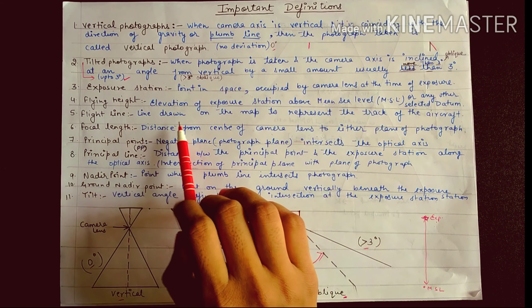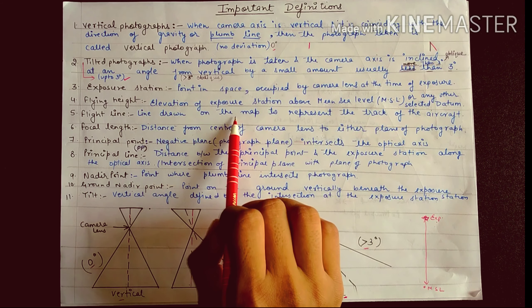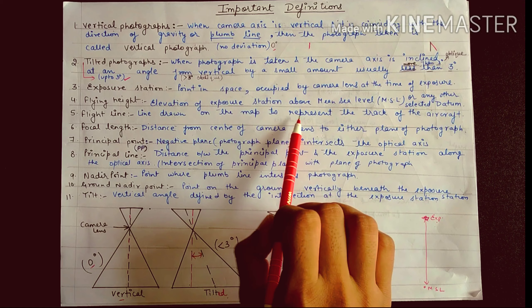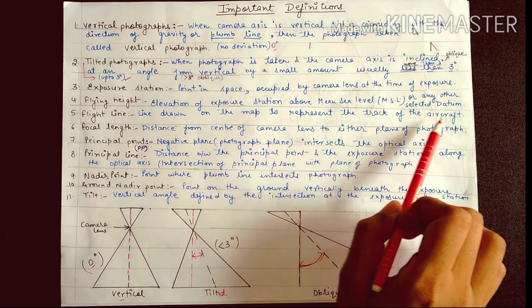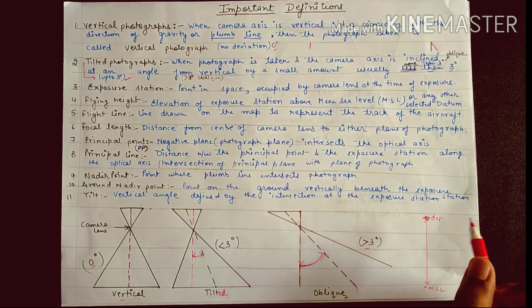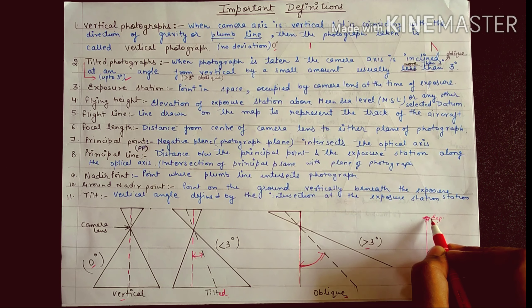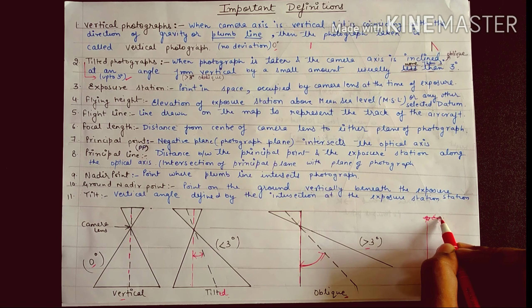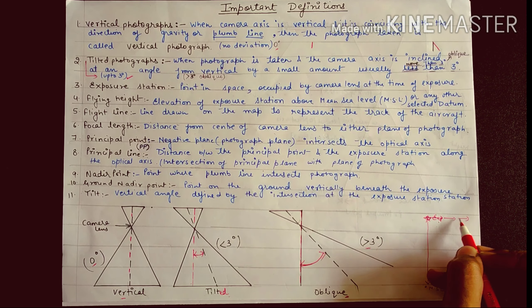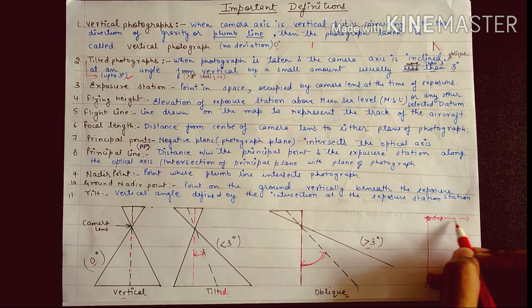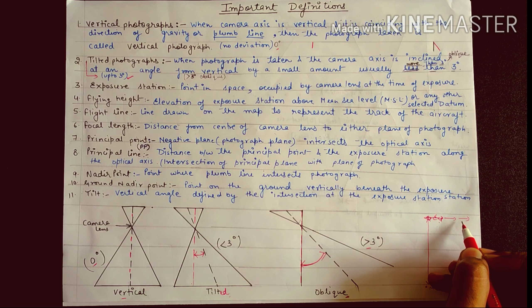Flight line is the line drawn on the map to represent the track of the aircraft. If the flight is going in a particular direction, that path is called the flight line.